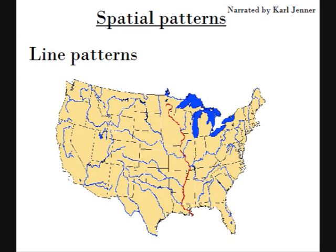We will now look at line patterns. An example of spatial line patterns might be found on a map of roads or river networks. Notice how many rivers flow into the Mississippi River, which is the river marked in red. Considering the vast area of the US that these rivers flow through, consider how much sediment must be carried by each of these rivers, how much of this moves into the Mississippi River and then ends up in New Orleans.